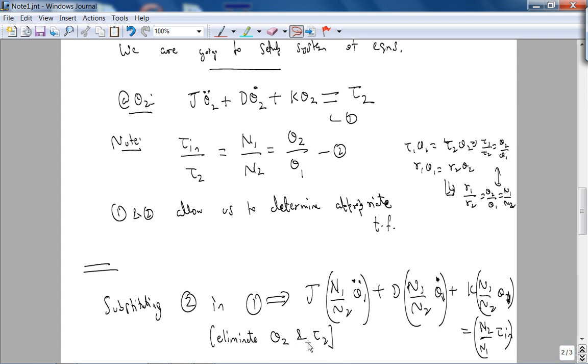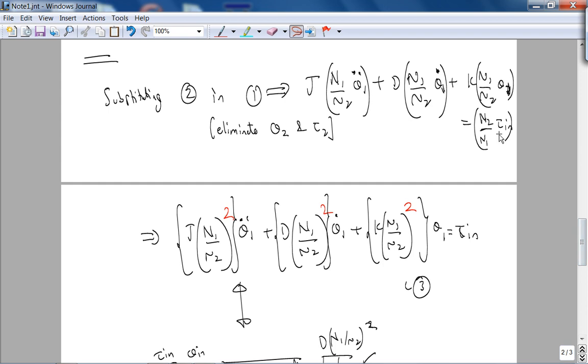...eliminate θ2 and τ2. In other words, let's get everything in terms of θ1. θ2̈—these are just constants, so you multiply by N1/N2 here, N1/N2 here, N1/N2 here, and N1/N2 here. Multiply by N2/N1. Finally, in terms of the input shaft, you get the impedance on the output shaft times this ratio squared. Where do you get the squared? Just be careful with the math.